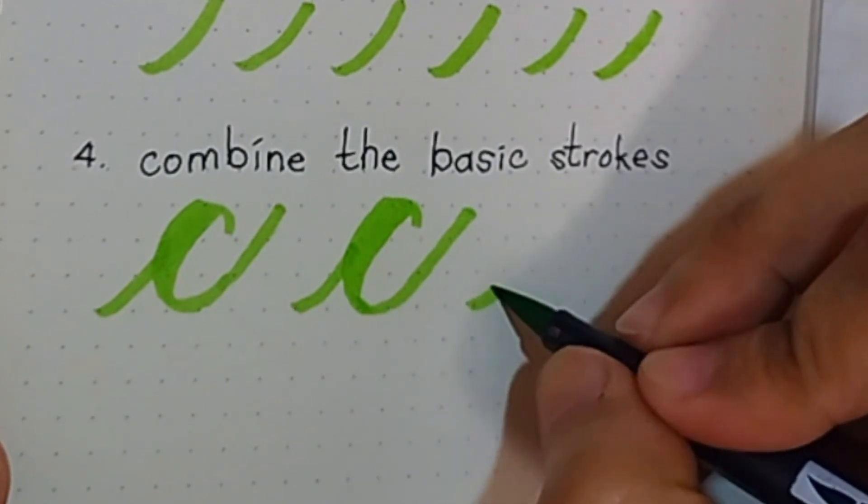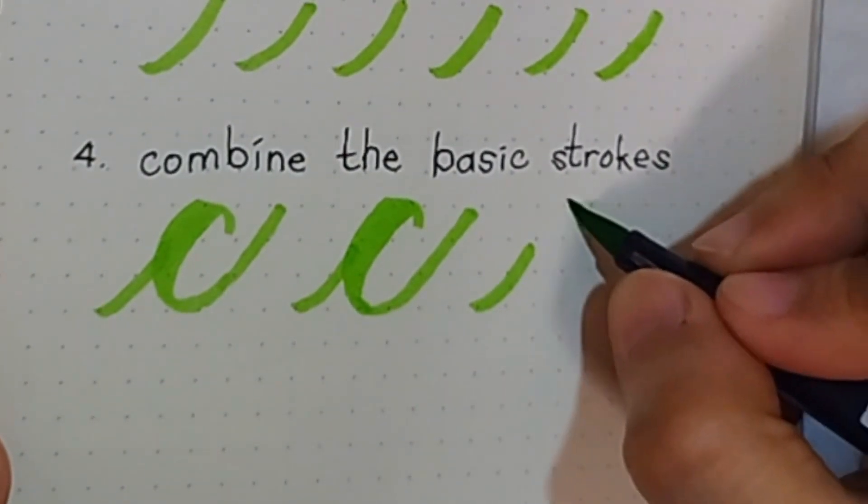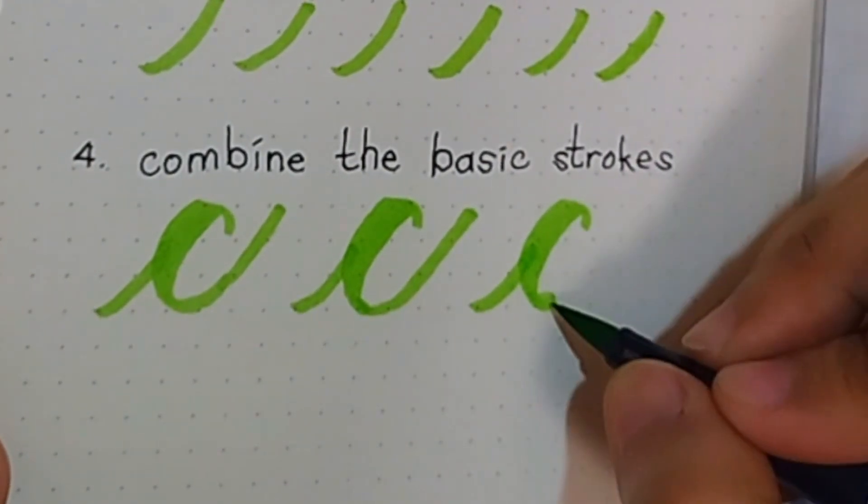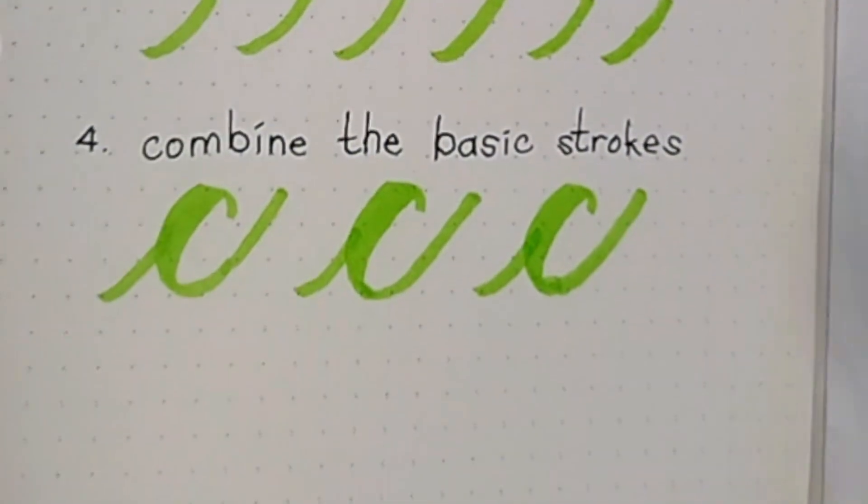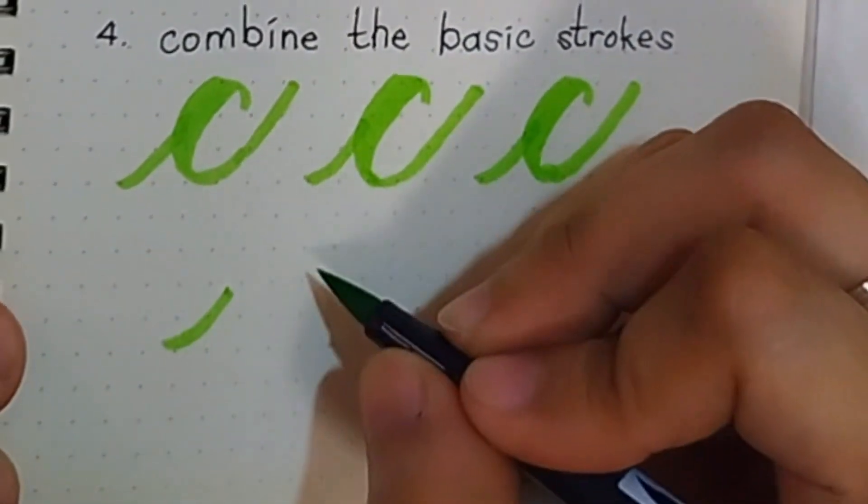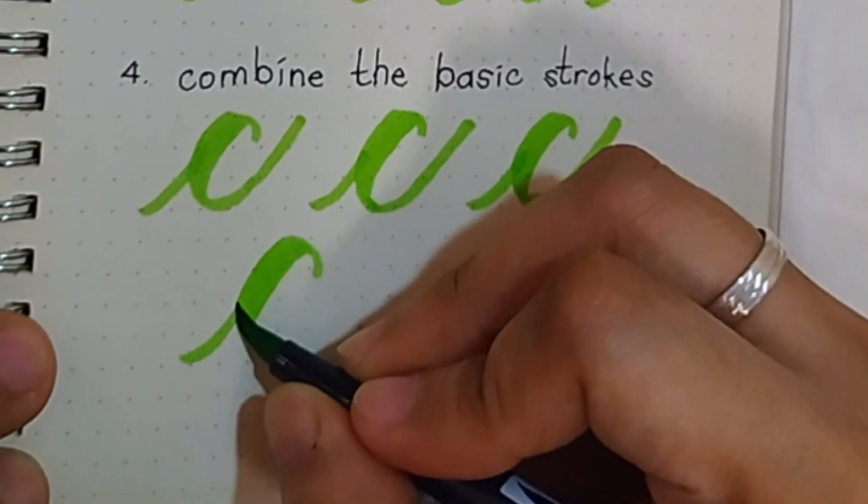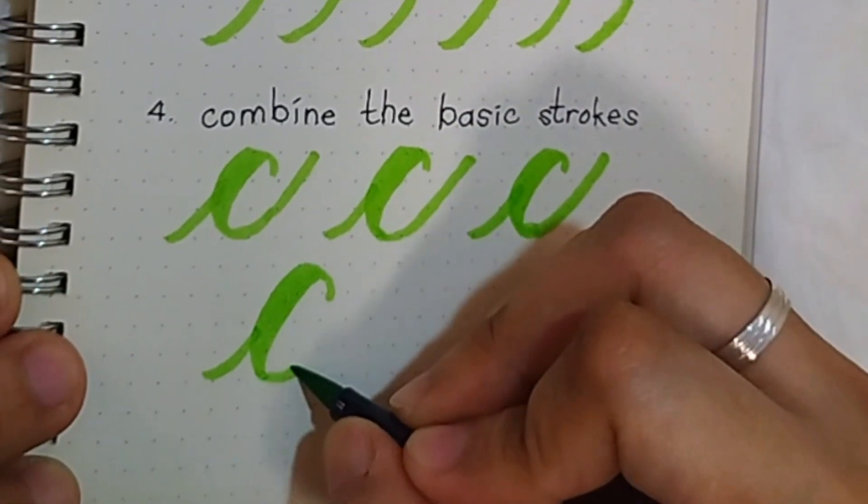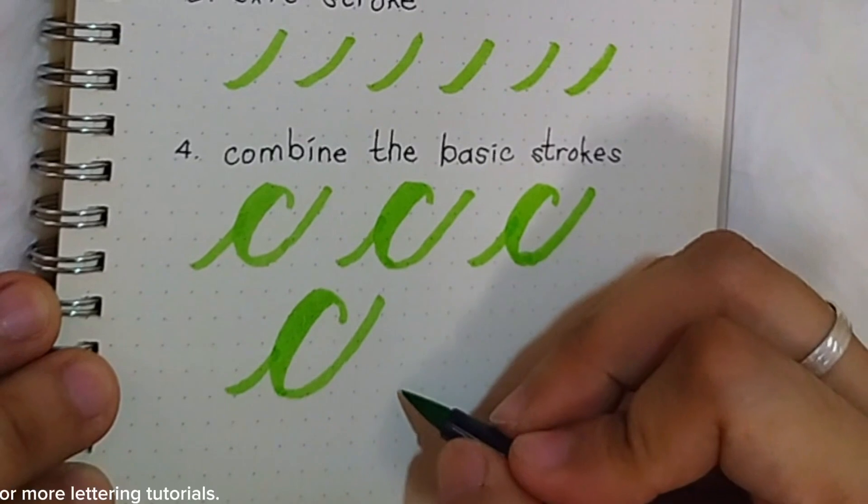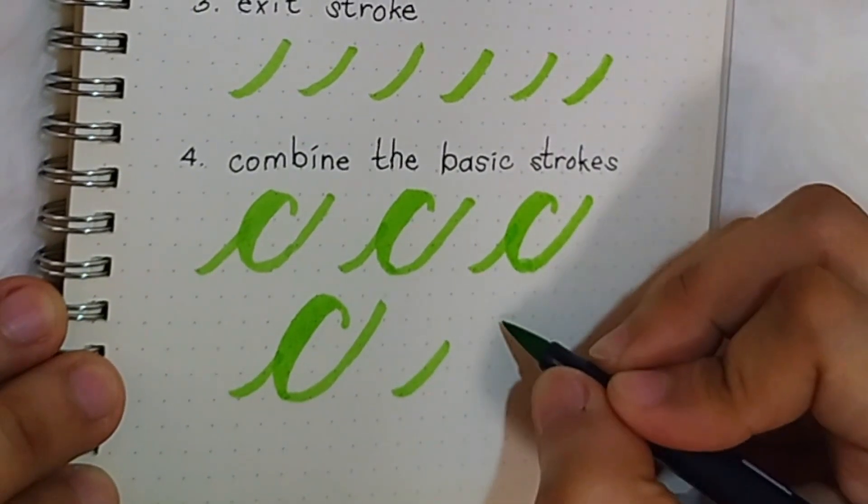Write slowly and remember to lift your pen after every stroke. Comment a name that starts with a letter C. Follow my account for more lettering tutorials.